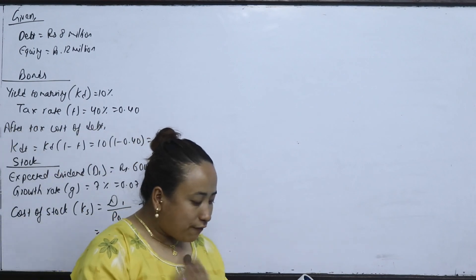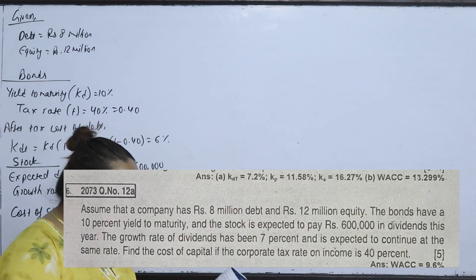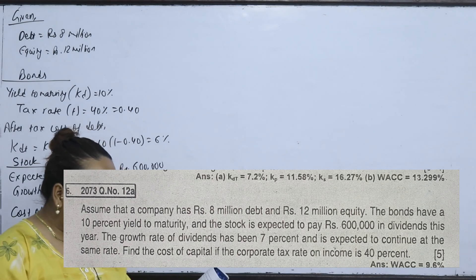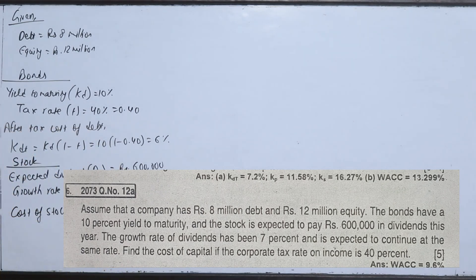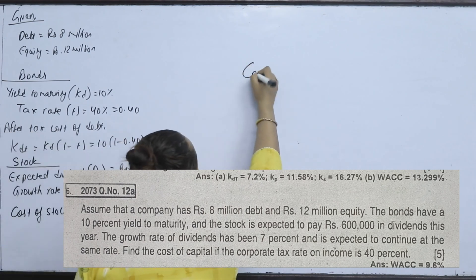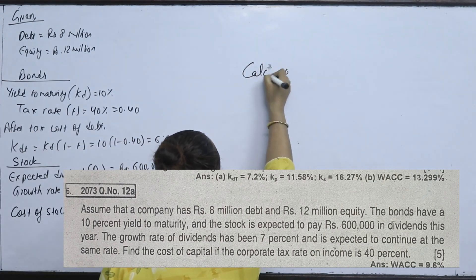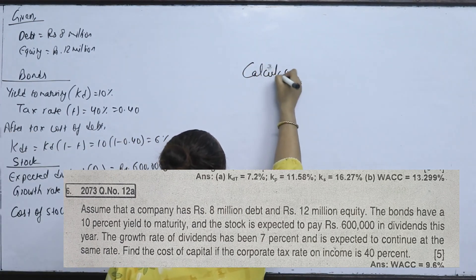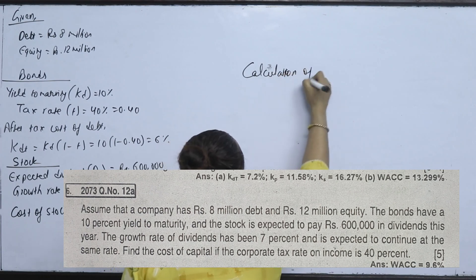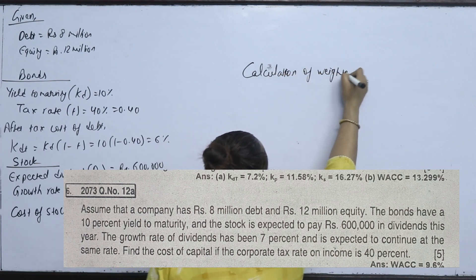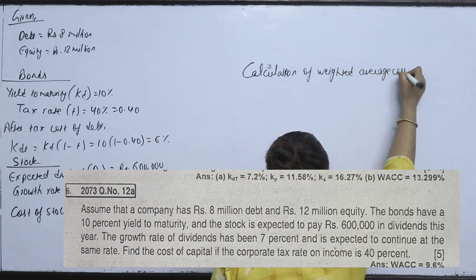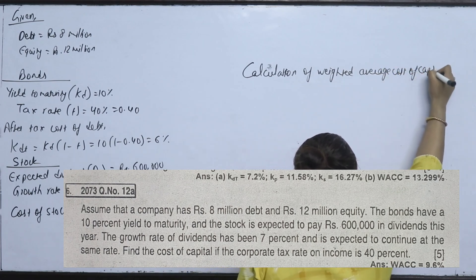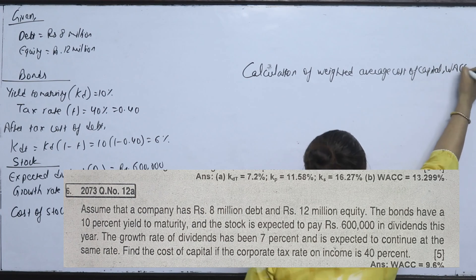Find the cost of capital if the corporate tax on income is 40%. The tax rate used is 40%. We now calculate WACC — the weighted average cost of capital.